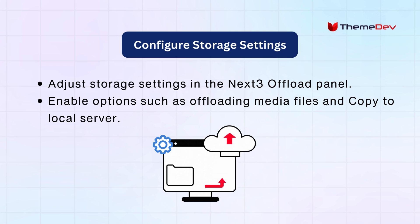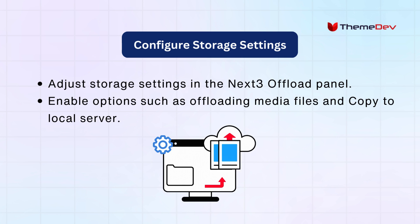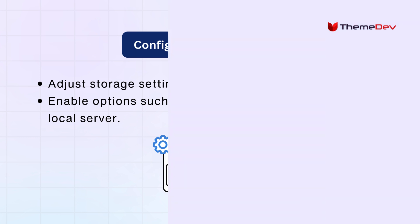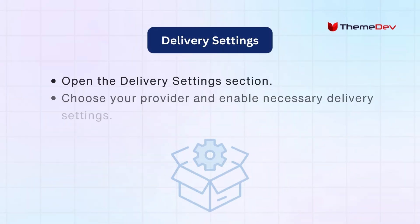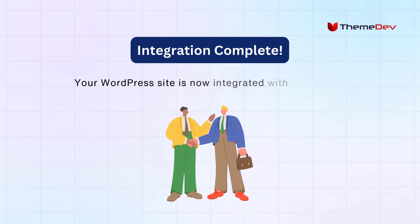Adjust storage settings in the Next3 Offload panel. Enable options such as offloading media files and copy to local server. Open the Delivery Settings section. Choose your provider and enable necessary delivery settings.